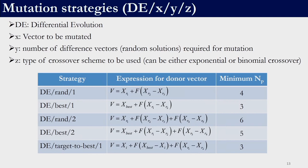Whether using binomial crossover or exponential crossover, at least one variable will always come from the donor vector. There are a few variants of DE.